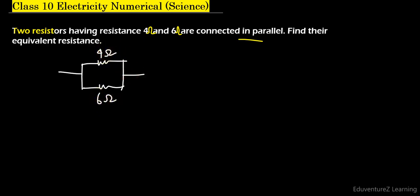We have calculated the equivalent resistance and both are in parallel. We'll use the formula 1 upon R equivalent is equal to 1 upon R1 plus 1 upon R2.